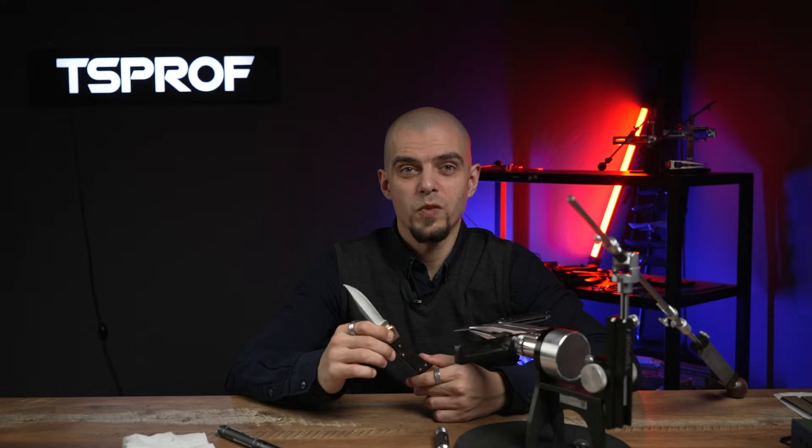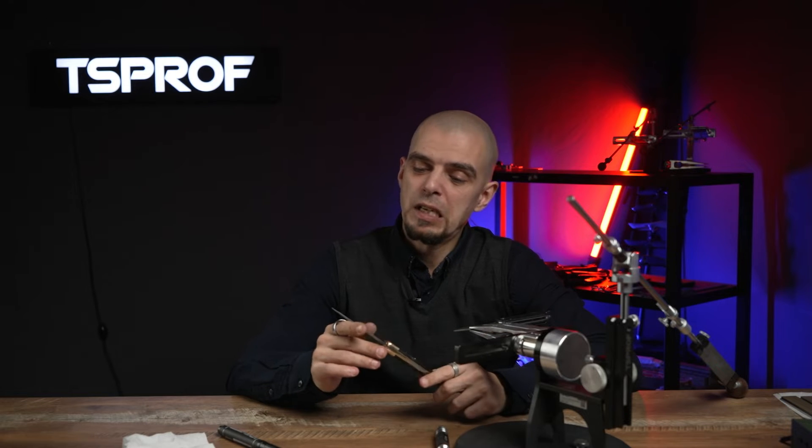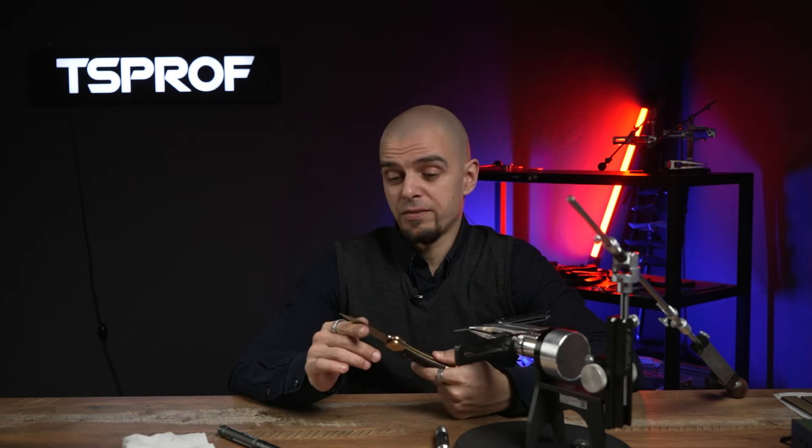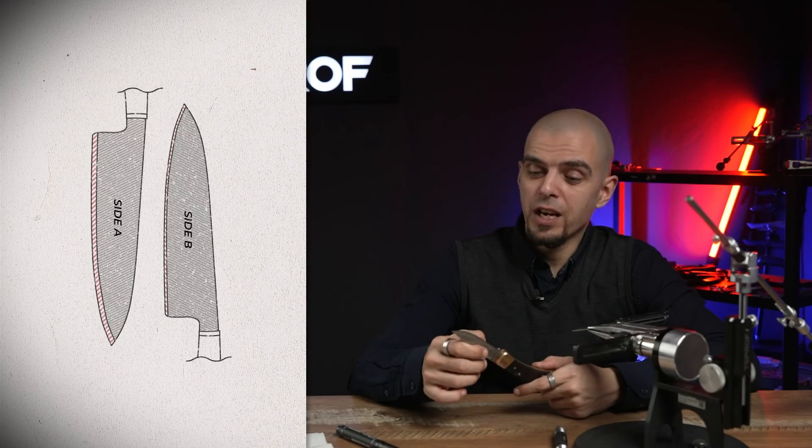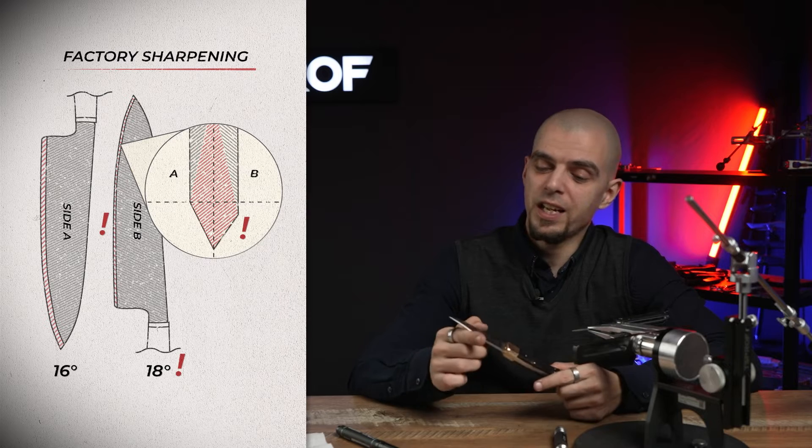Let's discuss a common situation. You bought yourself a new knife. It is straight from the factory and it might have the cutting edge that is wider on one side, more narrow on another side.